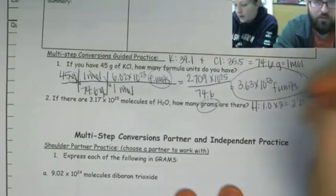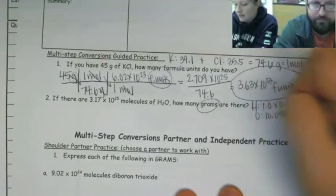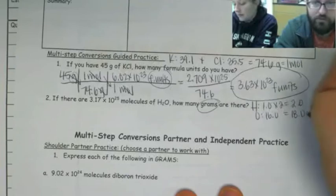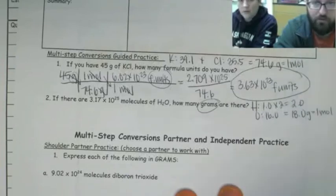And then O is 16. Uh-huh. So that's easy. That's just 18. All right. So our molar mass we're going to be using is 18 grams per mole.